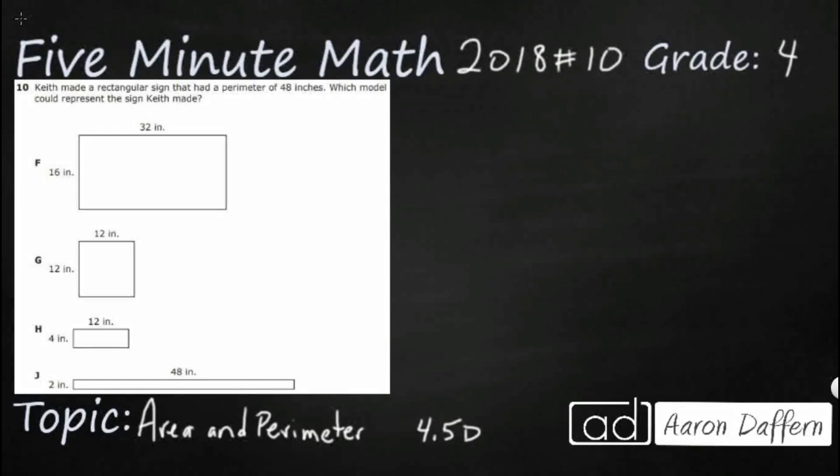Hello and welcome to 5-Minute Math. Today we are looking at the fourth grade concept of area and perimeter. This is standard 4.5D in the great state of Texas and we are using item number 10 of the 2018 released STAR test.